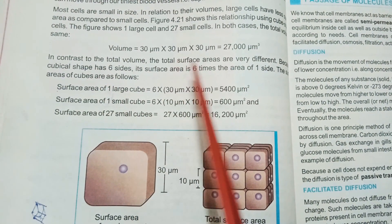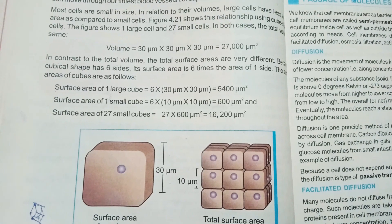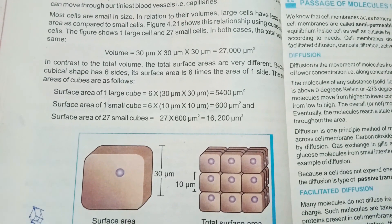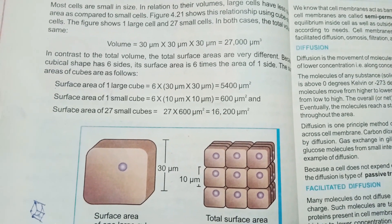In contrast to the total volume, the total surface areas are very different because cubical shape has six sides. Its surface area is six times the area of one side.